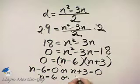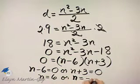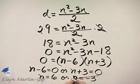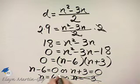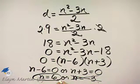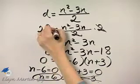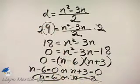Now, don't forget what N stands for. N stands for the number of sides of this polygon. So we can't let N be negative 3, the number of sides can't be negative 3, so the number of sides of a polygon with nine diagonals is 6.